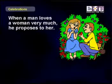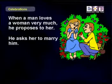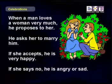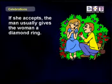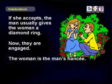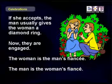Please follow along and listen as I tell the story. When a man loves a woman very much, he proposes to her. He asks her to marry him. If she accepts, he is very happy. If she says no, he is angry or sad. If she accepts, the man usually gives the woman a diamond ring. Now they are engaged. The woman is the man's fiancé. The man is the woman's fiancé.